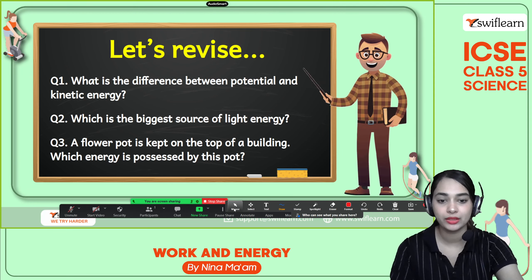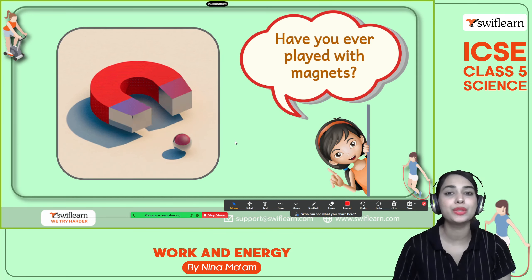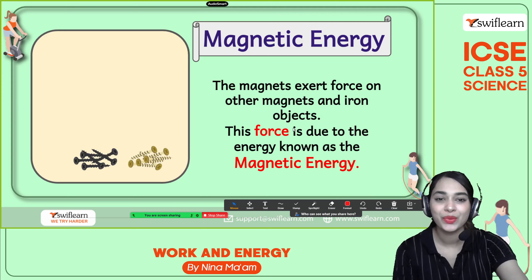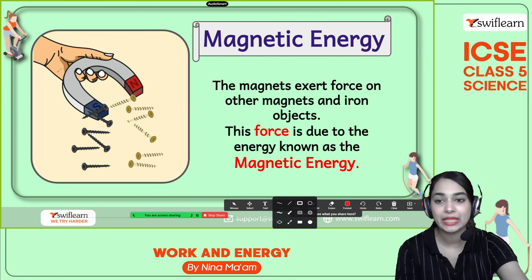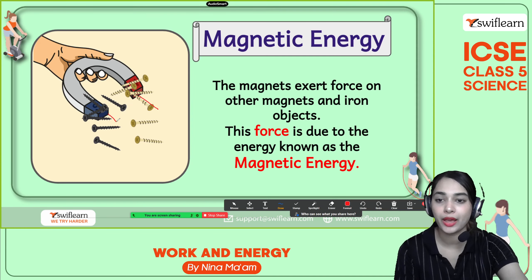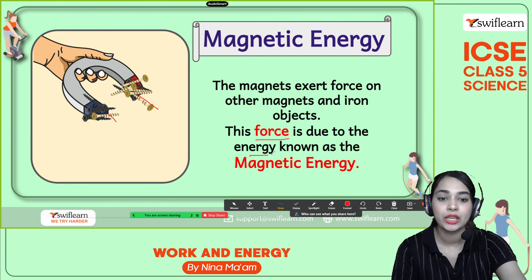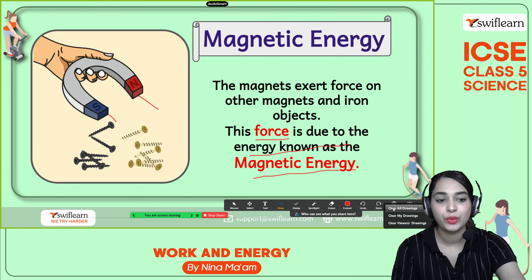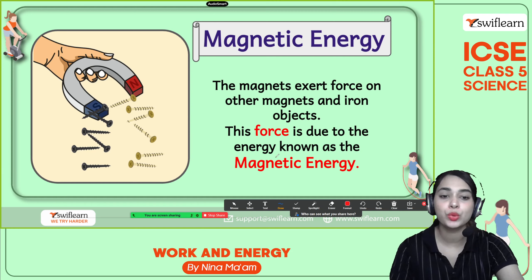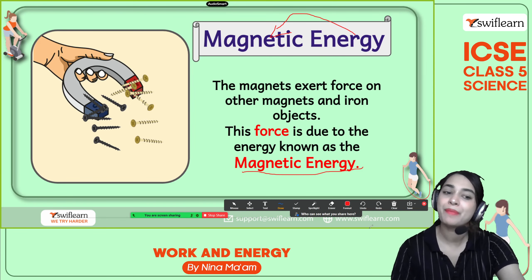Let's look at another form of energy. This is a magnet — have you ever used a magnet to attract things? Magnetic energy: there is a force released between the magnet and the iron object, and this force is due to an energy known as magnetic energy. There is a force which applies between the magnet and the iron object, and that force is due to magnetic energy. The energy associated with magnets is known as magnetic energy.